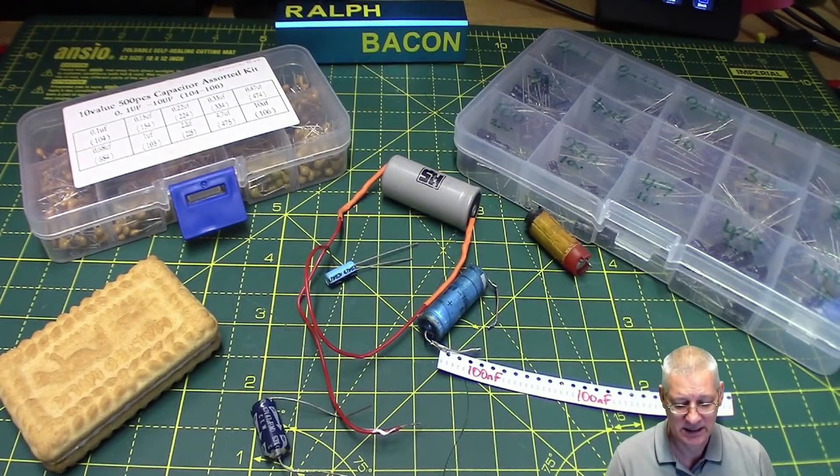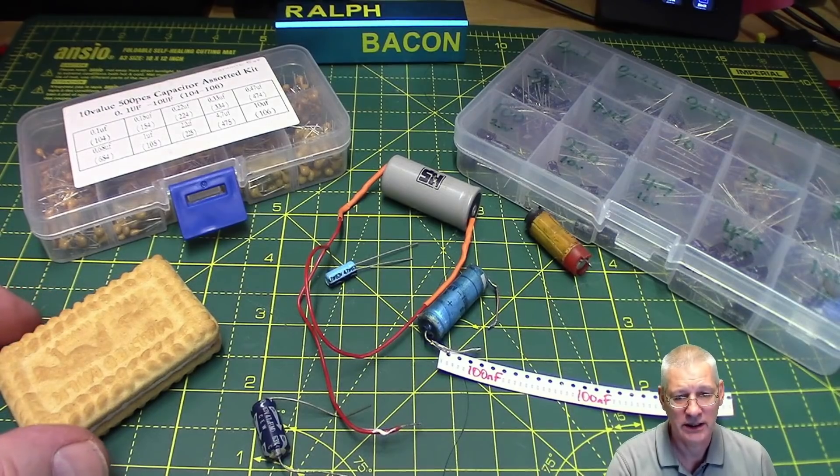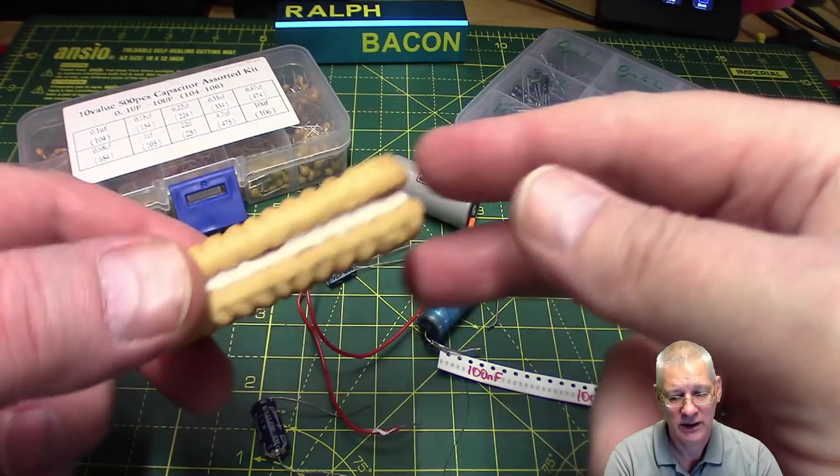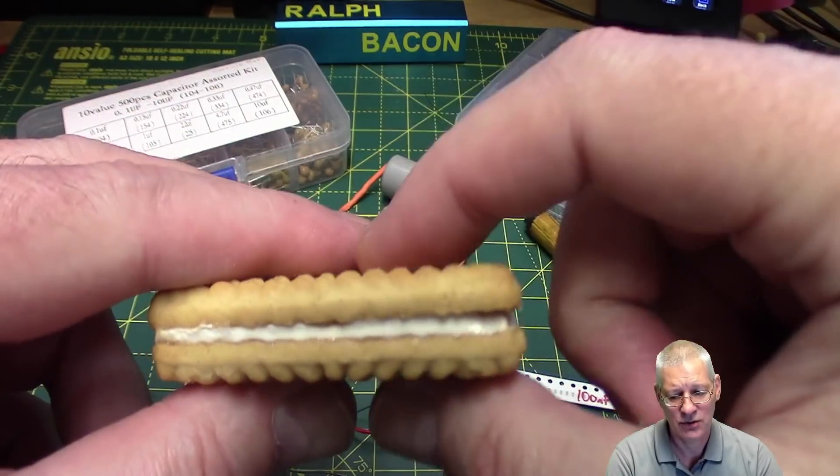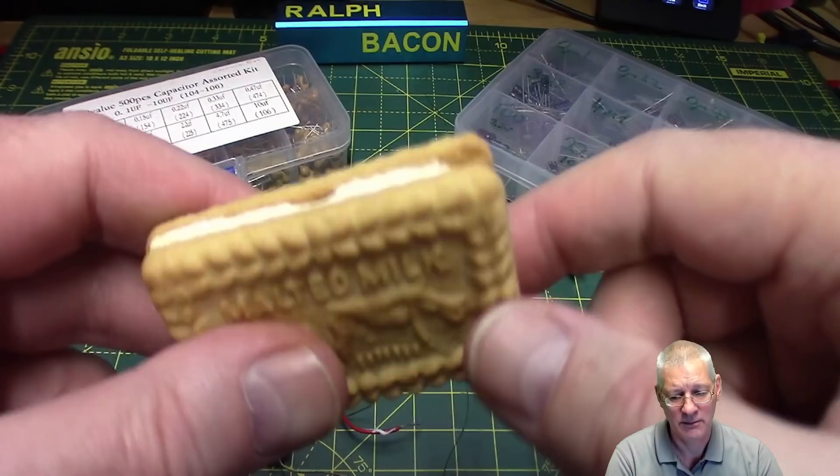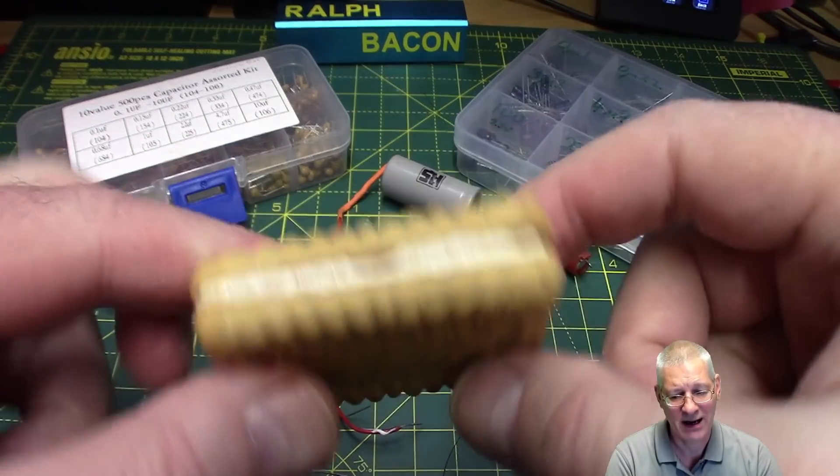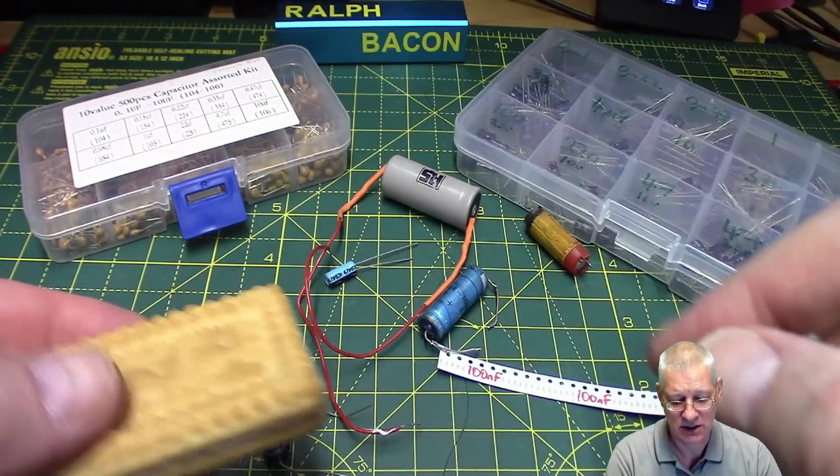What's that biscuit you see on my desktop? You can call it a cookie if you really want to. But it's a sandwich, really, made of two cookies with a filling in the middle. And it's a good way to envisage how all capacitors are made.